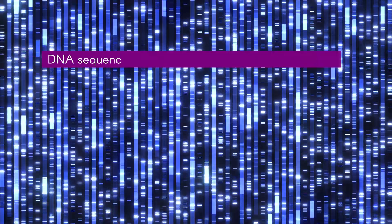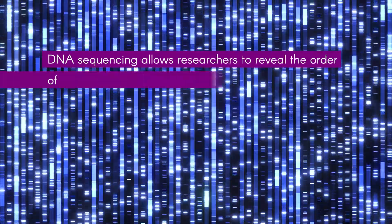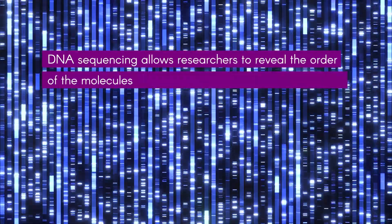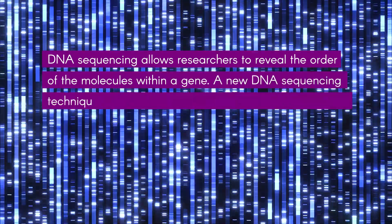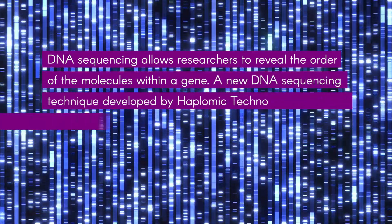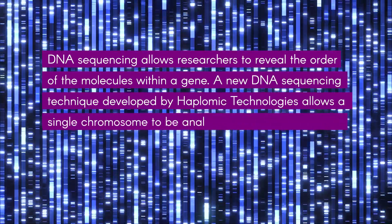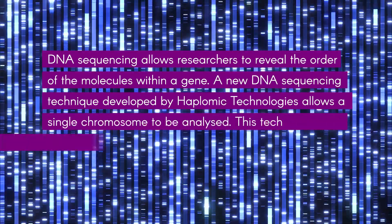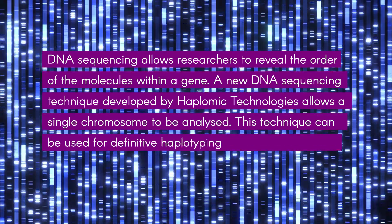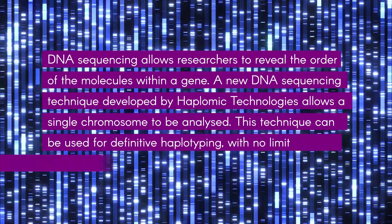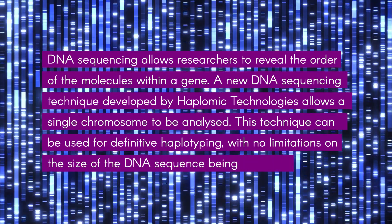DNA sequencing allows researchers to reveal the order of the molecules within a gene. A new DNA sequencing technique developed by Haplomic Technologies allows a single chromosome to be analysed. This technique can be used for definitive haplotyping, with no limitations on the size of the DNA sequence being studied.